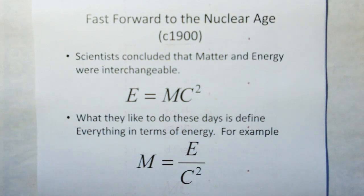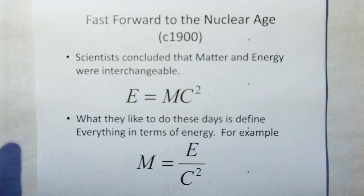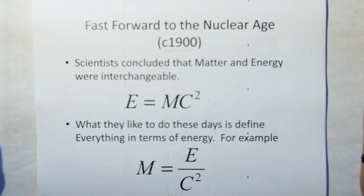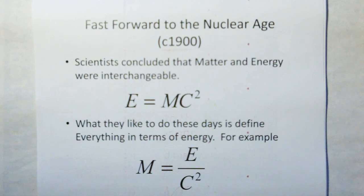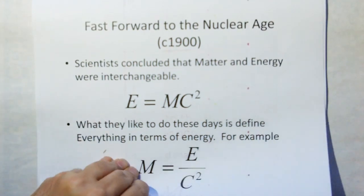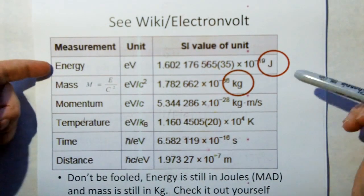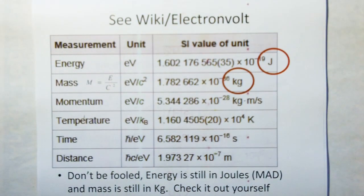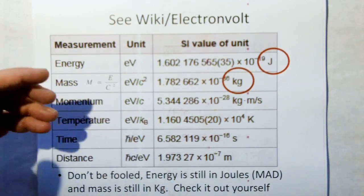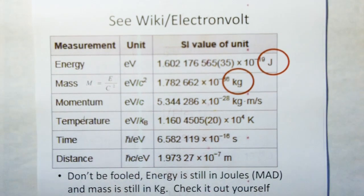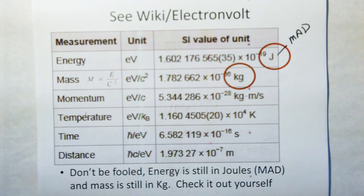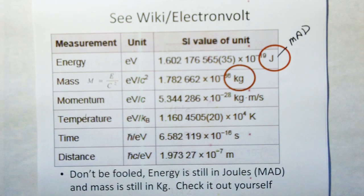So fast forward to the nuclear age, circa 1900. Scientists concluded that matter and energy were interchangeable. That's where we get Einstein's E equals MC squared. And what they like to do in a lot of things these days, especially with quantum mechanics, is they like to substitute mass out by replacing it with energy over C squared so that they can talk strictly in terms of energy. They do this with the electron volt. Mass is the electron volt divided by C squared. Now, you might think they figured this whole problem out. There's no circular definition. Everything is defined in terms of energy. No, the energy here, the units here are joules, which are still MAD. This is still a definition which requires mass to be part of the definition. They haven't done anything. All they've done is put lipstick on a pig.